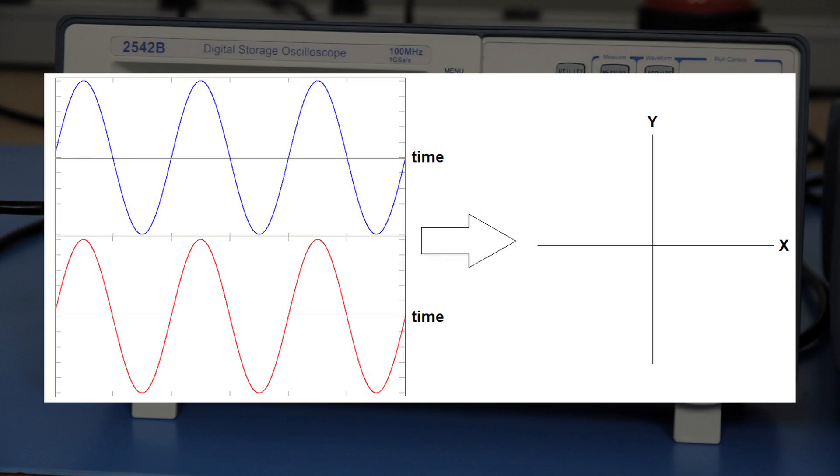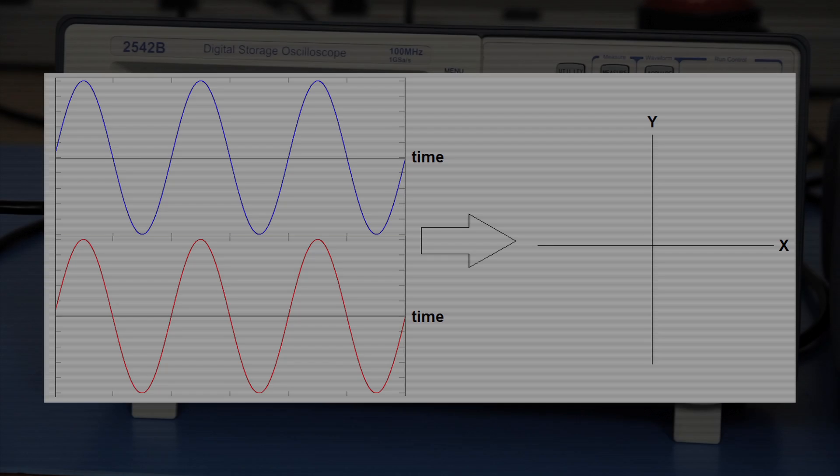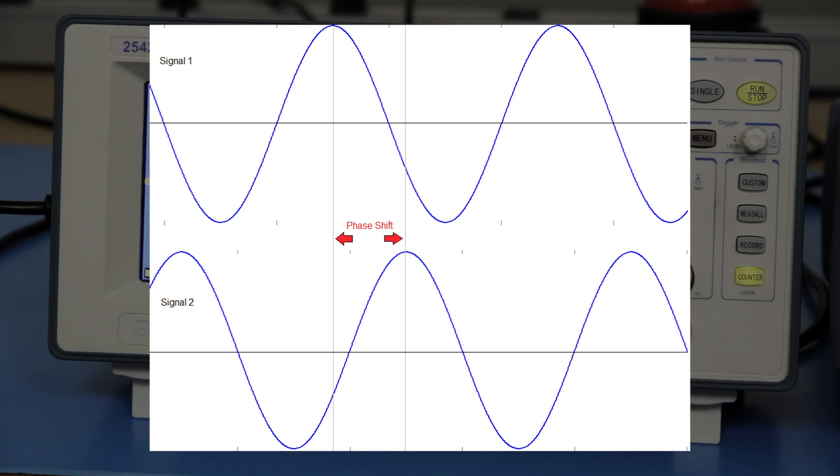Lissajous patterns can be illustrated by a plot of two sinusoidal waveforms on an XY plane. Depending on the two signals' phase differences, different patterns can be created. These patterns, which can be displayed on an oscilloscope, can then be used as a quick way to determine the phase difference of the two signals.